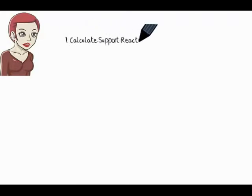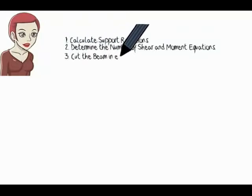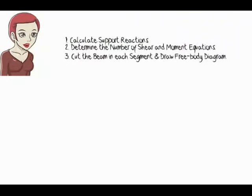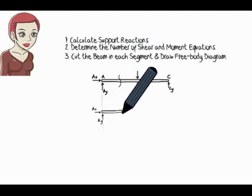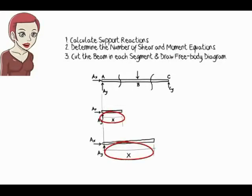To summarise: to write shear and moment equations, first we calculate the beam's support reactions; second, we determine the segments the beam needs to be divided into for formulating shear and moment equations. The third step is to cut the beam in each of the identified segments at some distance x from the left end of the beam. For example, if the beam has two segments AB and BC, we cut it twice — once in segment AB and once in segment BC — labelling the distance from the left end as x in both cases. Then we draw the free body diagram for each cut.